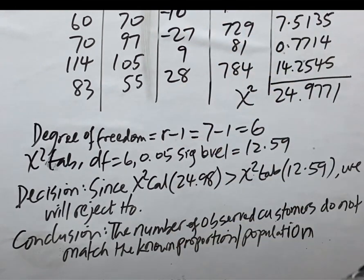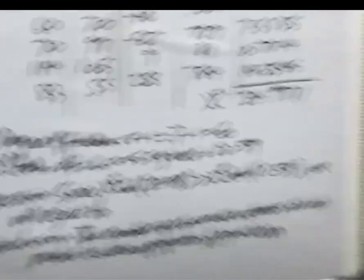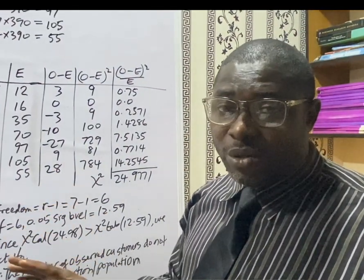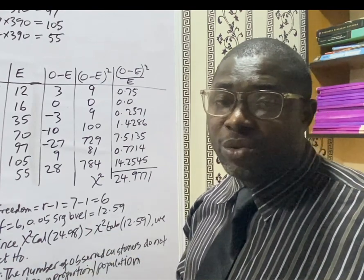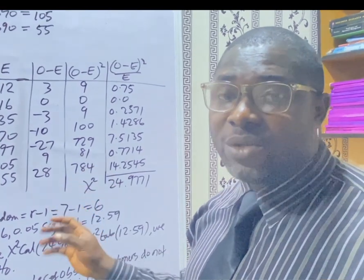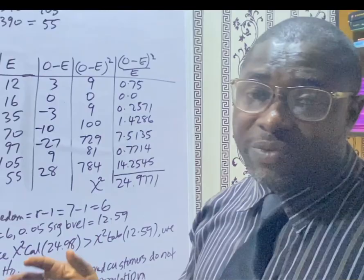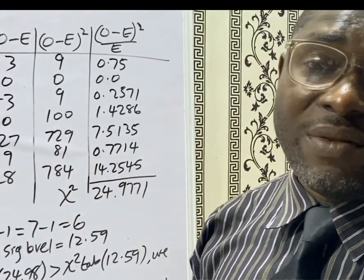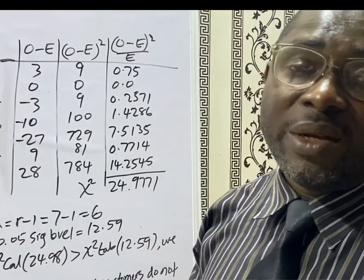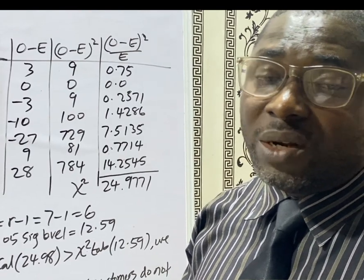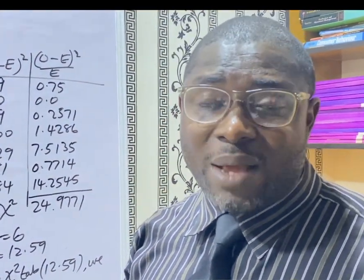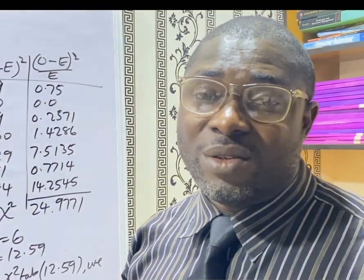In summary, for Chi-Square tests of goodness of fit: you'll be given observed values and proportional percentages. Find the expected values, compute your Chi-Square value, then compare against the table. If Chi-Square calculated is greater than Chi-Square tabulated, you reject the null hypothesis; otherwise you fail to reject it. Thank you for joining me in this series. Please like this video, share it, leave a comment, and subscribe to the channel. Thank you very much.